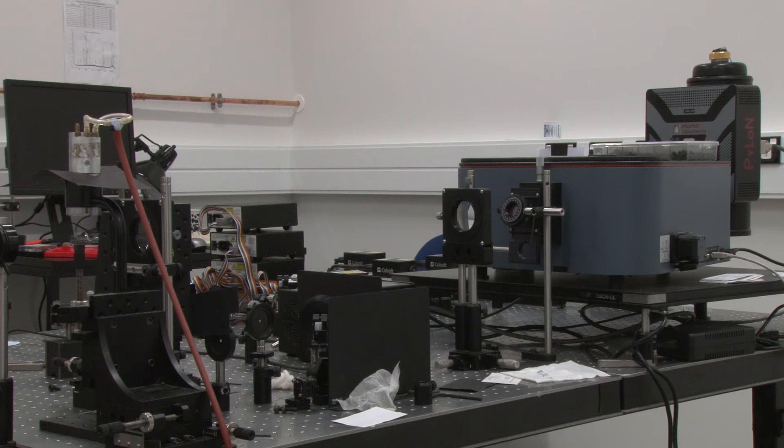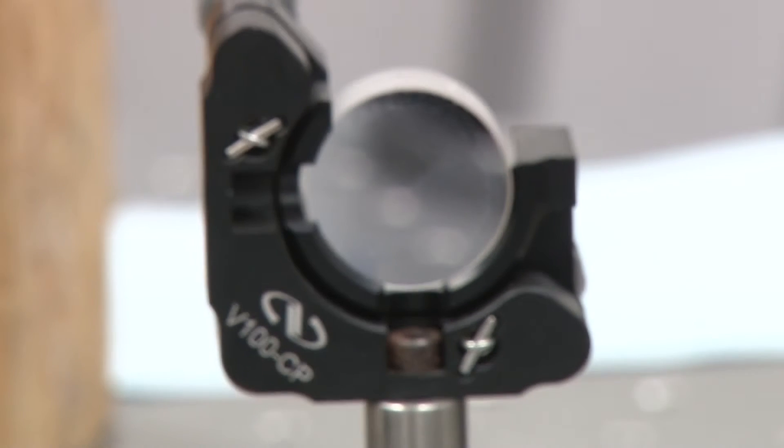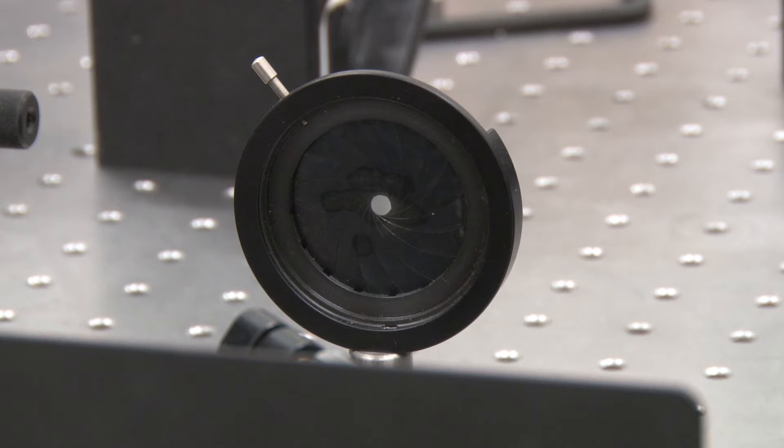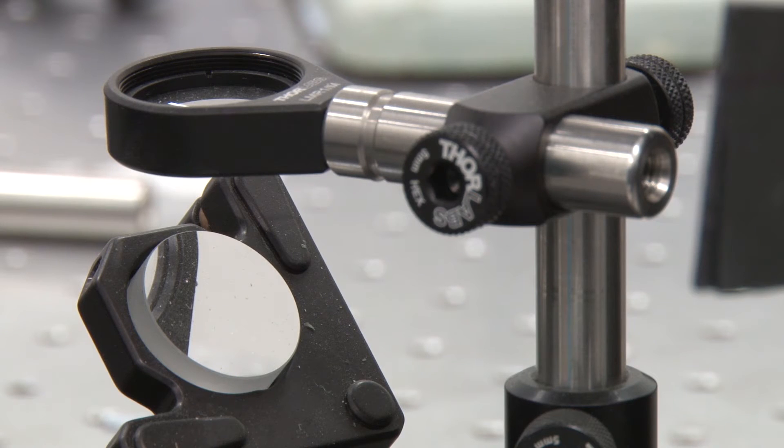So what we have here is the deconstructed box, right? These are actually the sorts of components that are inside those boxes except they're higher spec than in the manufacturer's machines and they're generally a lot more flexible.